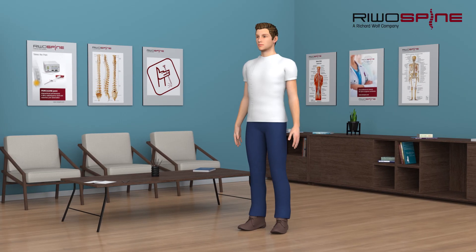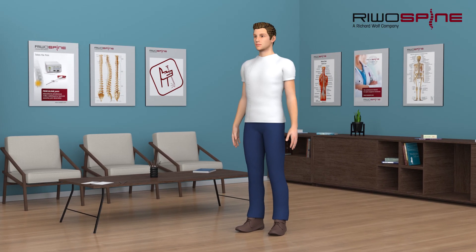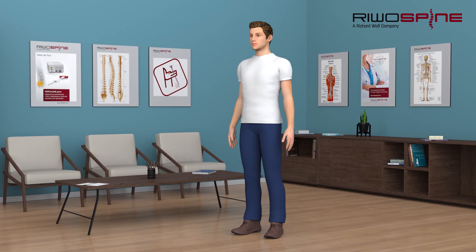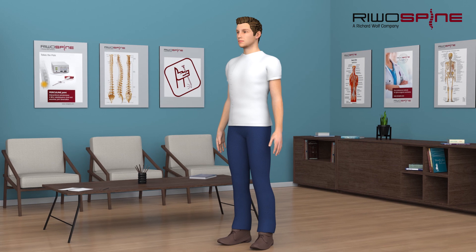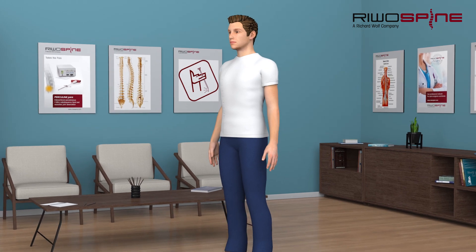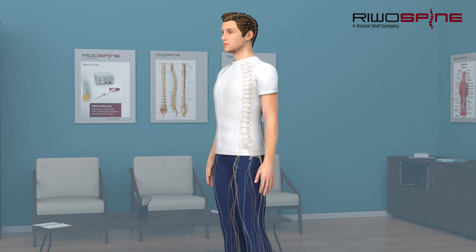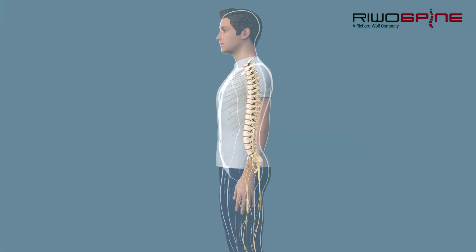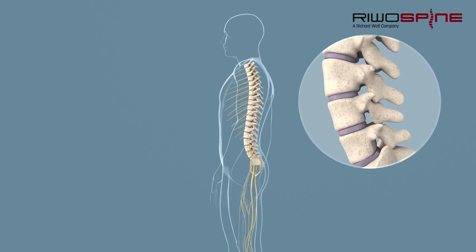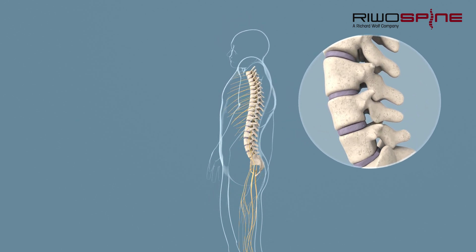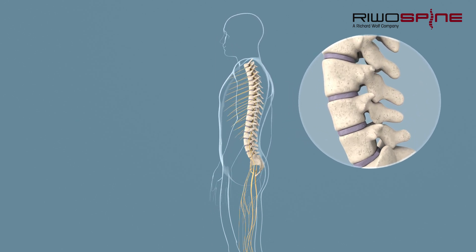Due to its anatomical structure, the human spine allows enormous freedom of movement and is at the same time the center of the musculoskeletal system. The intervertebral discs of the spinal column play an important role in this.